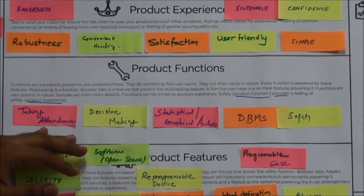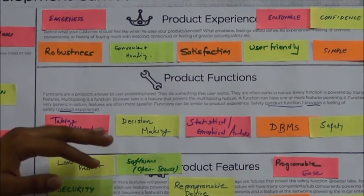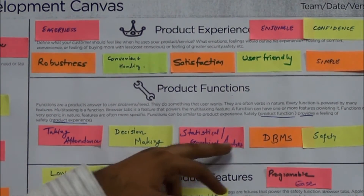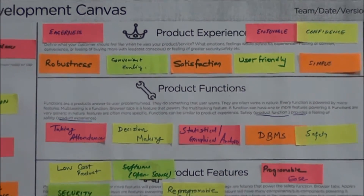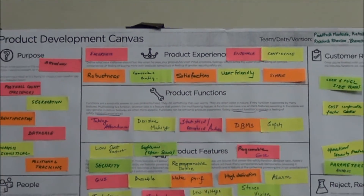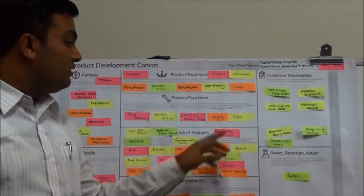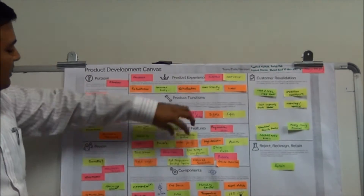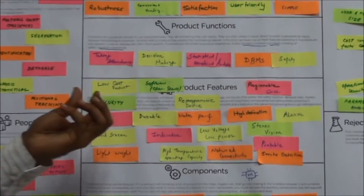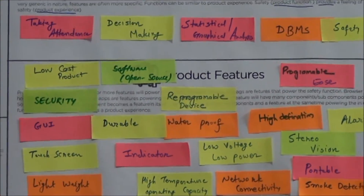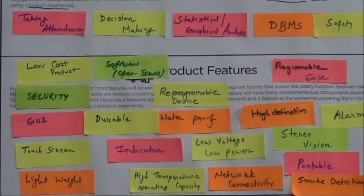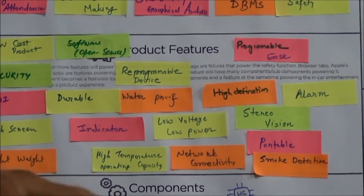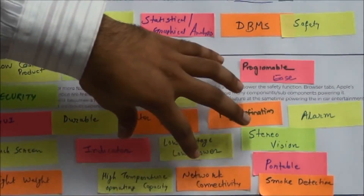Then different functions — what functions your product has. For the attendance process, it should have the function to take attendance, decision-making to identify the person, statistical and graphical analysis, database management system, and a safety function. Different product features include: low cost, different software operated on open source platforms, it should be programmable, have security, a graphical user interface, touch screen, lightweight, and network connectivity.